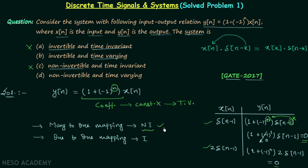So the answer is option D: non-invertible and time varying. Option B is not correct because it states the system is invertible, but we have shown the system is non-invertible and time varying. This is the answer, and I will end this lecture here. See you in the next one.